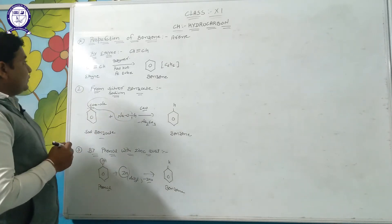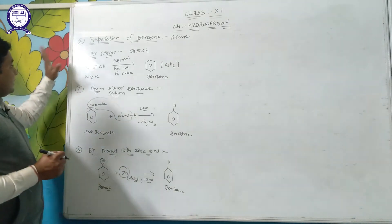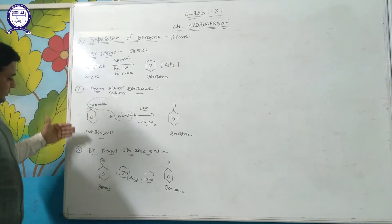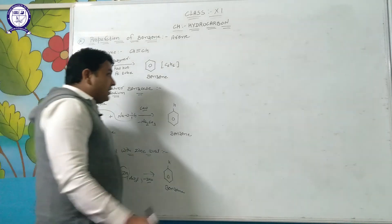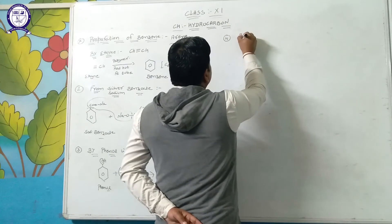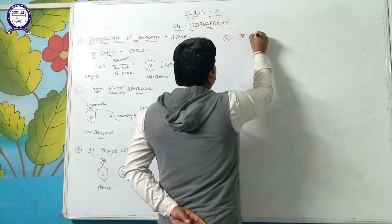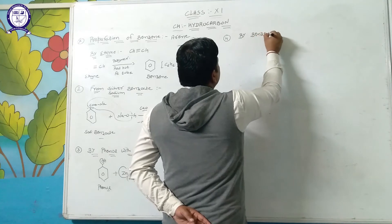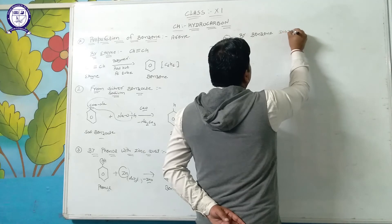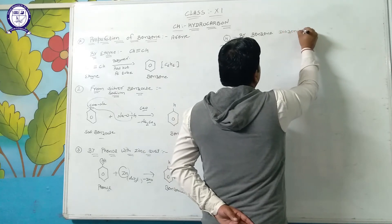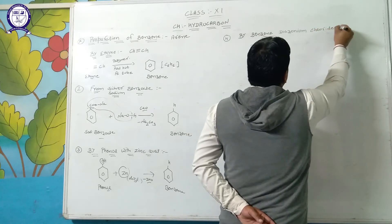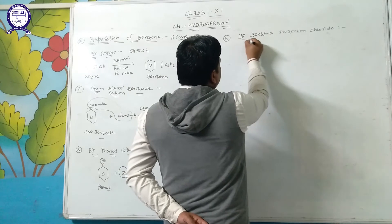To summarize preparation of benzene: first by ethyne, second by silver or sodium benzoate, third by phenol with zinc dust, and fourth by benzene diazonium chloride.